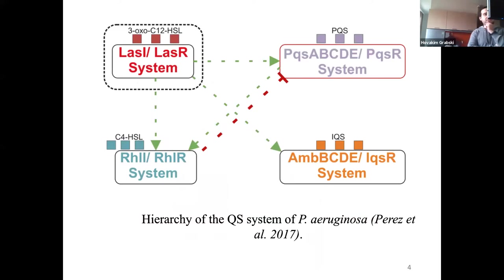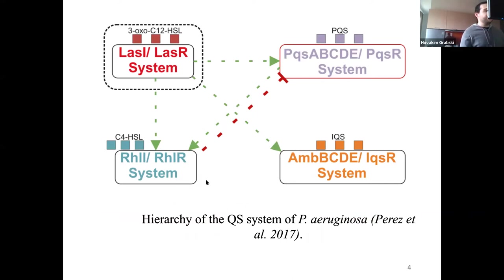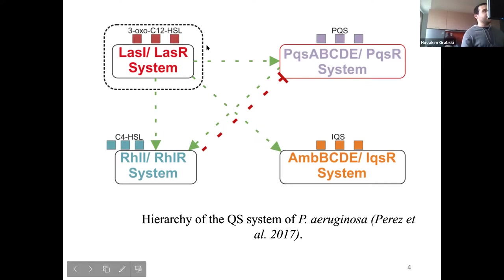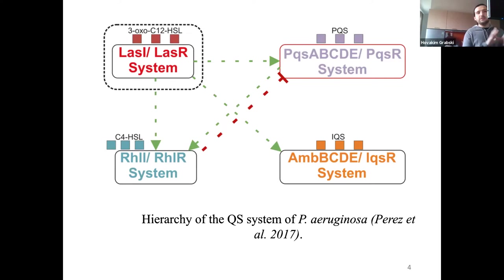The quorum sensing system consists of three different systems. As you can see here, this is the hierarchy of the QS system of Pseudomonas aeruginosa. From the slide, you can see that the LasI/LasR system controls the others. Basically, if we inhibit the LasR system, we can stop the signaling cascade which activates the whole quorum sensing system of the bacteria.